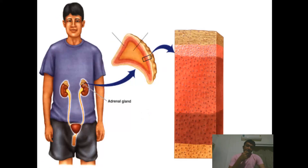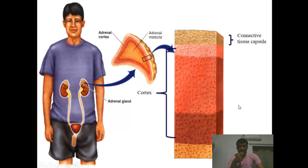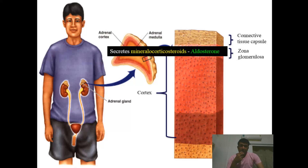Moving towards the details of the internal structure: the outer portion is the capsule, which is white fibrous connective tissue. You have two structures — cortex and medulla. The cortex is a large layer at 80 to 90 percent, and the medulla is a very small layer at 10 to 20 percent. The cortex is again divided into three different parts. The first part is referred to as the zona glomerulosa, which is able to synthesize mineralocorticosteroids.